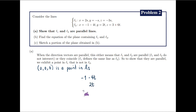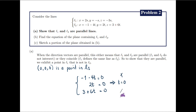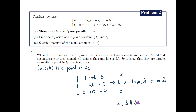Basically, we equate the parametric equations of L2 to the coordinates of the point (0, 0, 0). Notice that the second equation gives us t equals 0, but this is inconsistent with the first and third equations in the system. Hence, (0, 0, 0) cannot be a point in L2. The fact that the direction vectors v_L1 and v_L2 are parallel, combined with the fact that the lines L1 and L2 are not coincident, tells us that L1 and L2 are indeed parallel lines.